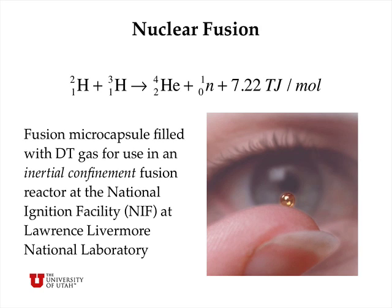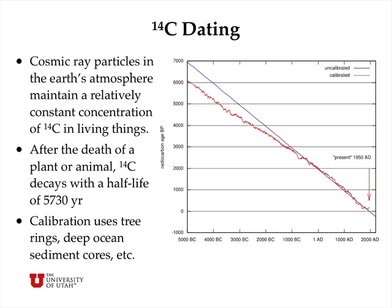At the other end of the spectrum we have nuclear fusion. Taking a deuterium atom and a tritium atom and fusing them together into a single helium-4 atom releases a neutron and 7.2 terajoules per mole of energy. Scientists at the National Ignition Facility at Lawrence Livermore National Laboratory and other places are trying to inertially confine deuterium and tritium gas in very small spaces at very high temperatures to get this fusion reaction to occur under controlled conditions to generate electric power.